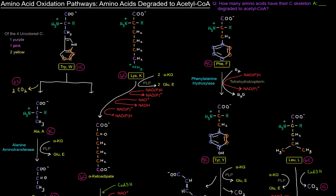Next up, the amino acids that are degraded to acetyl-CoA. How many amino acids have their carbon skeleton degraded directly to acetyl-CoA? There are seven in this case.